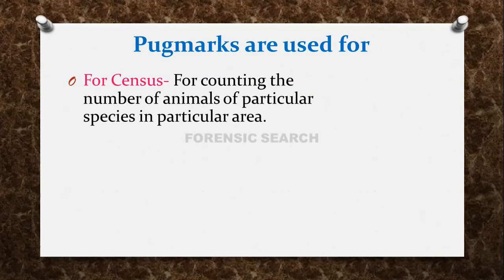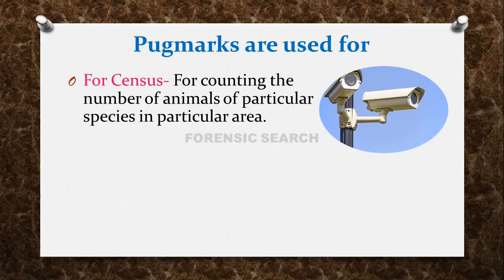Now, why do we use Pugmarks? Pugmarks are used for census purposes — that means for counting the number of animals of a particular species in a particular area. So whatever a particular forest or area there is, to count how many animals of a particular species are there, we can use Pugmarks. We can identify the number of animals of a particular species in a given particular area.